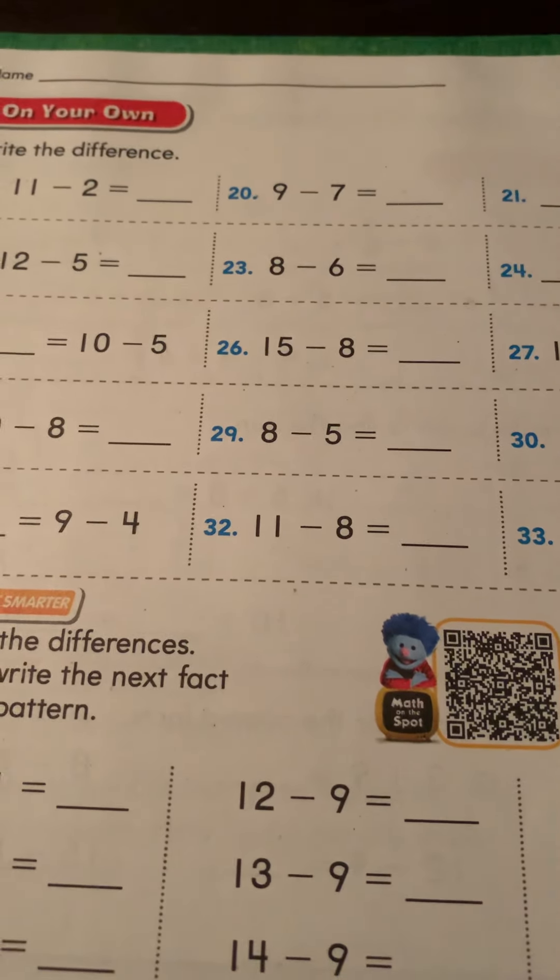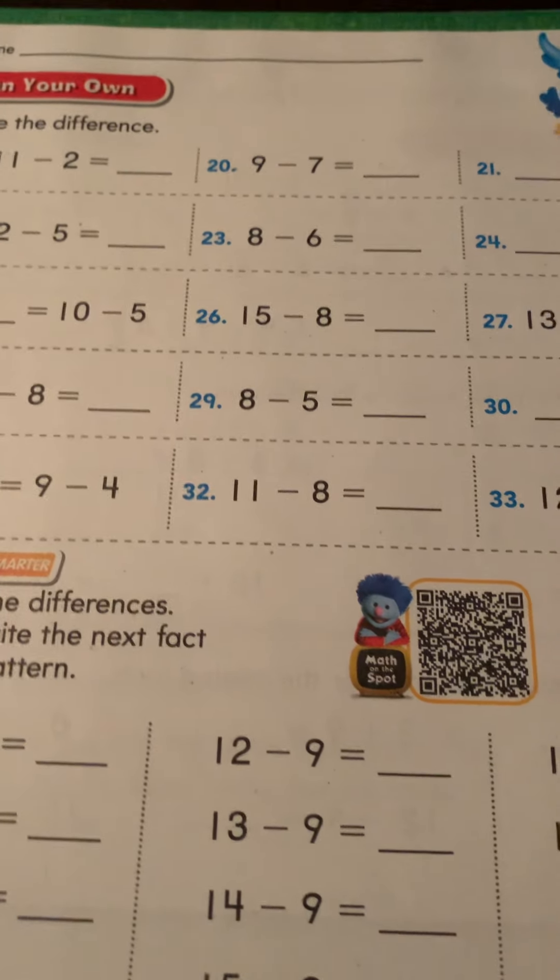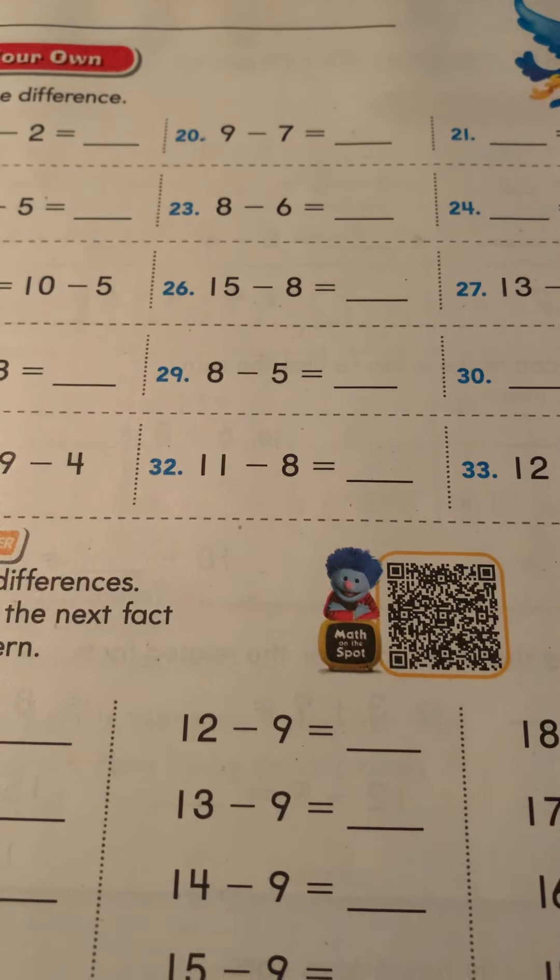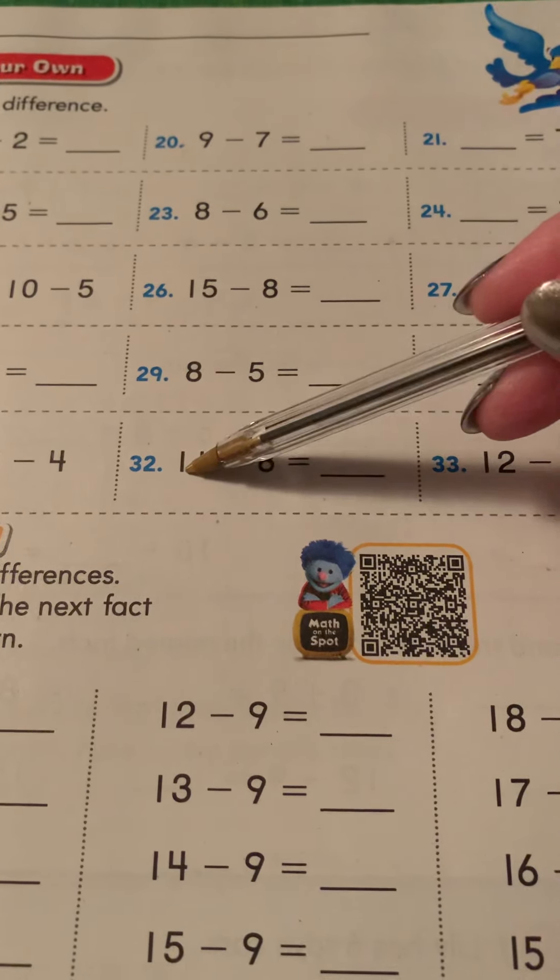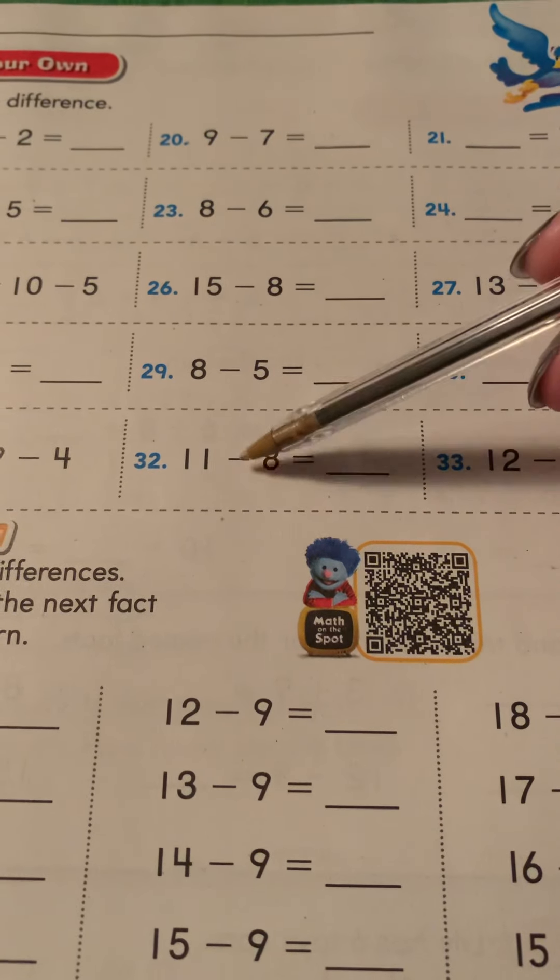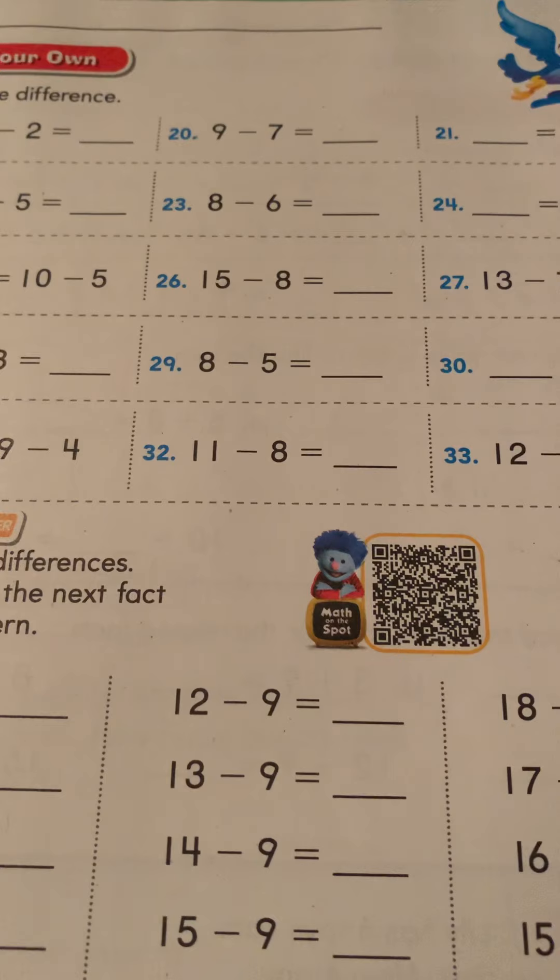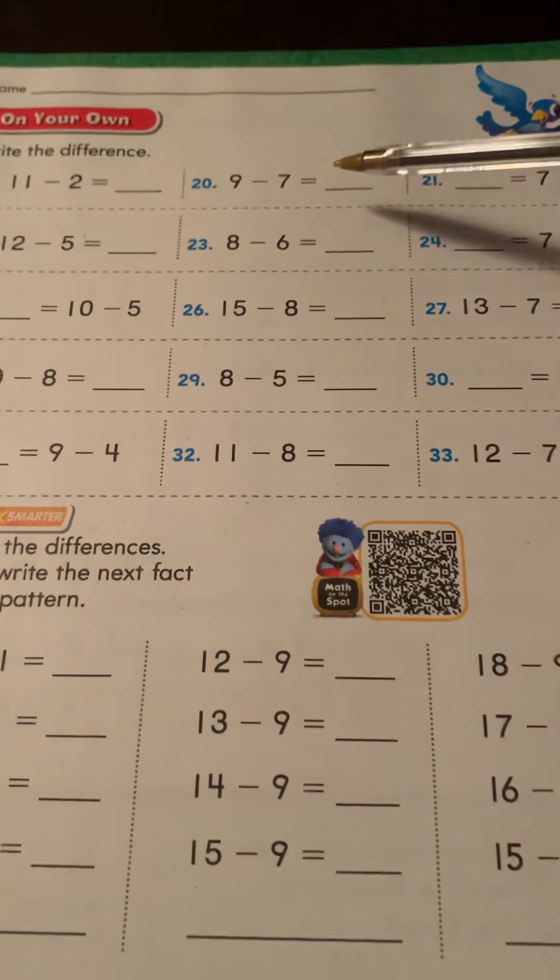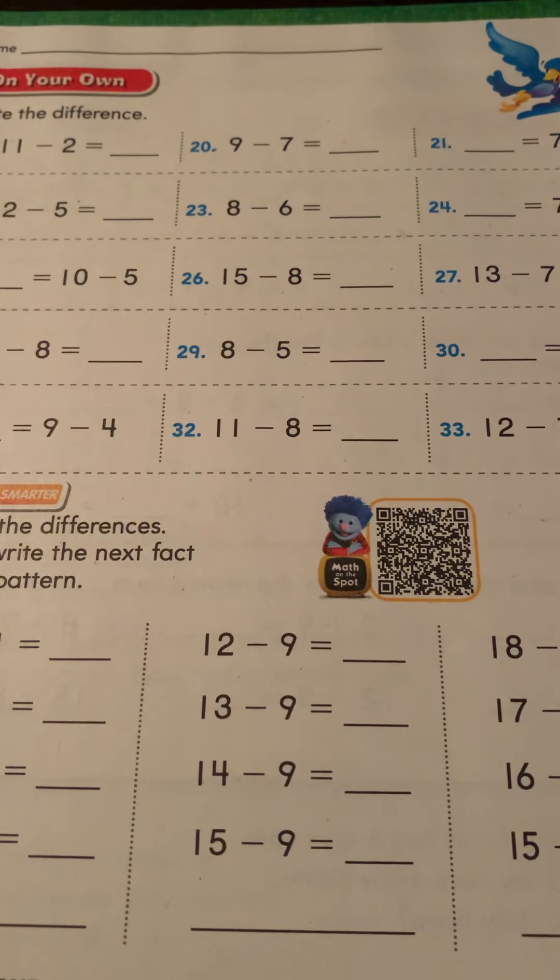We don't have any manipulatives to get you, but you can use anything. You can use little matchbox cars or Legos, anything that you have. Take out 11, take away eight. Remember subtracting, take away and count how many you have left. If you don't want to use touch points, try that method, try counting.